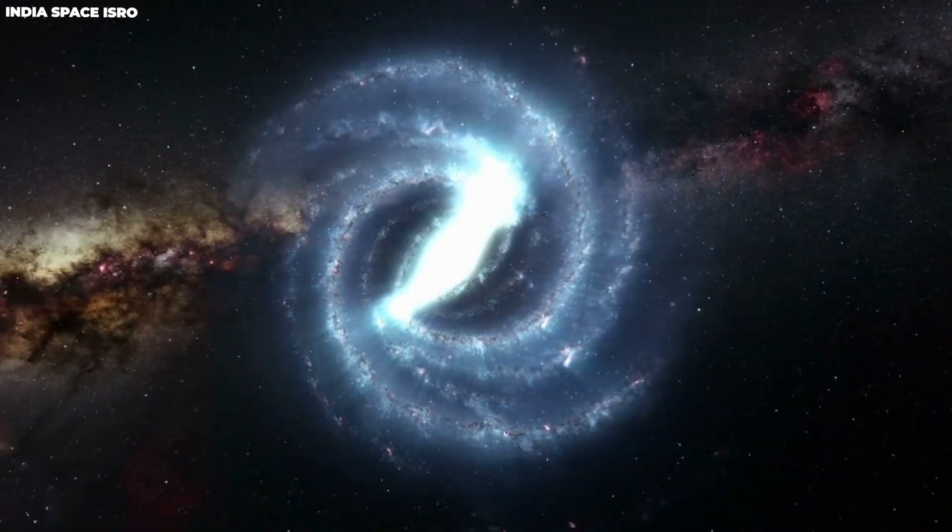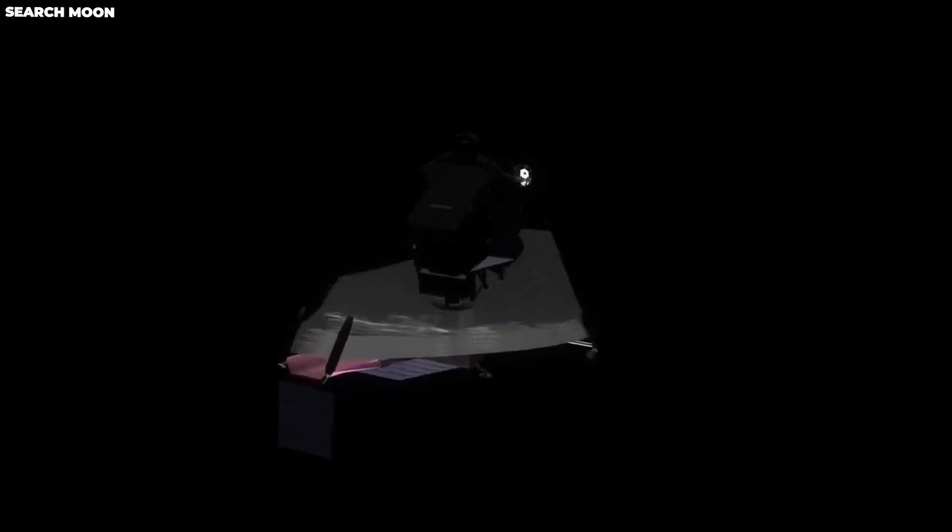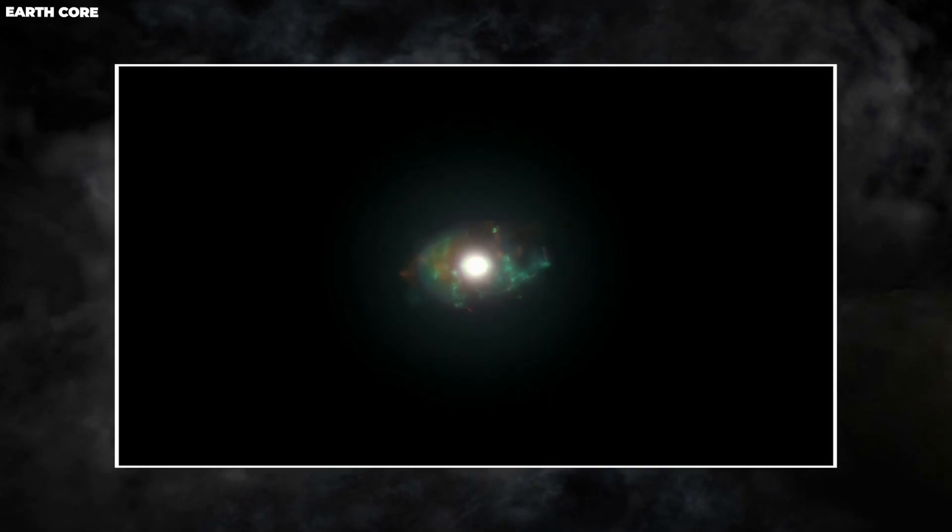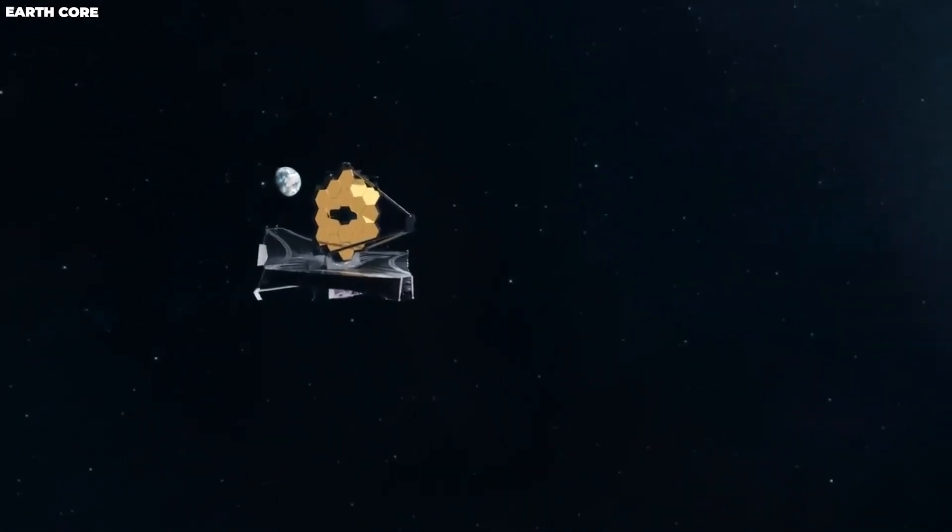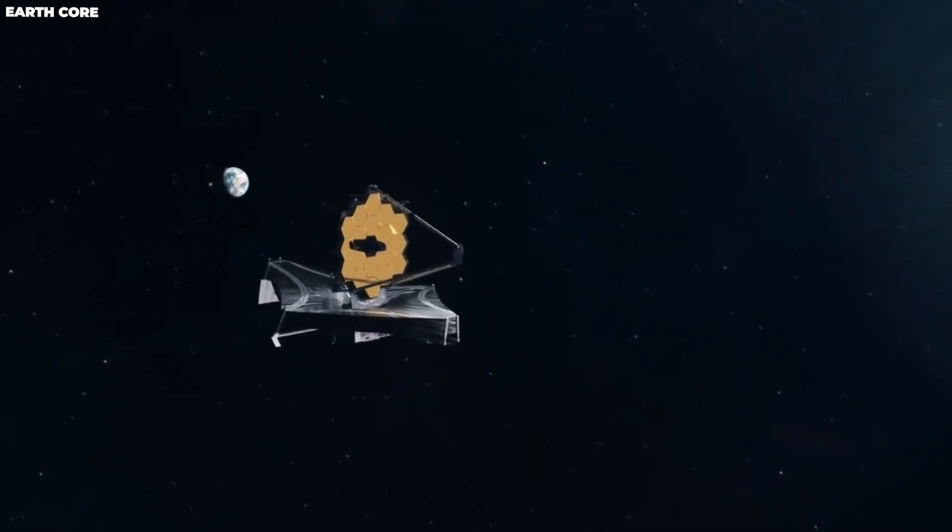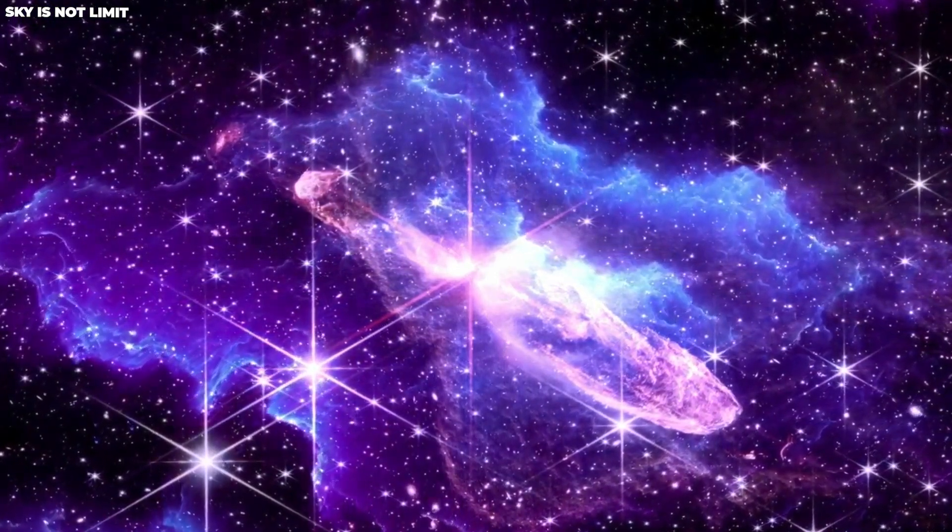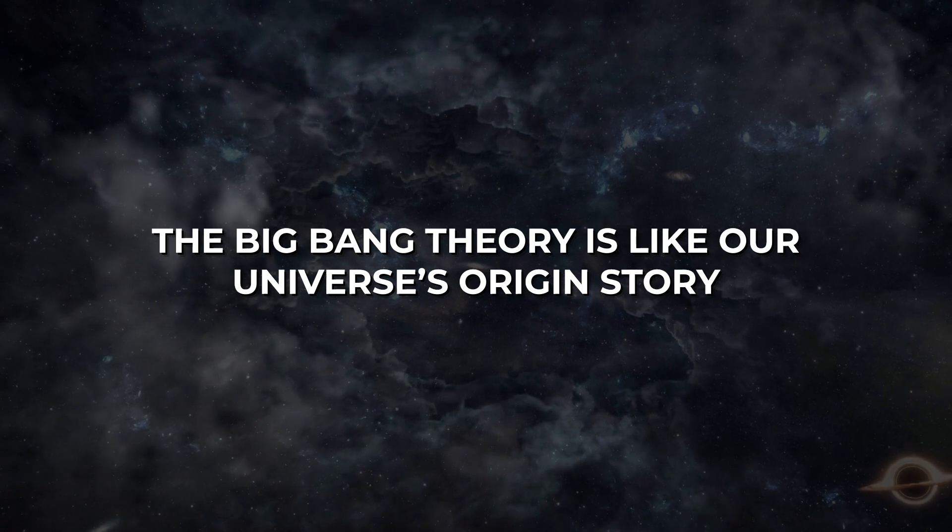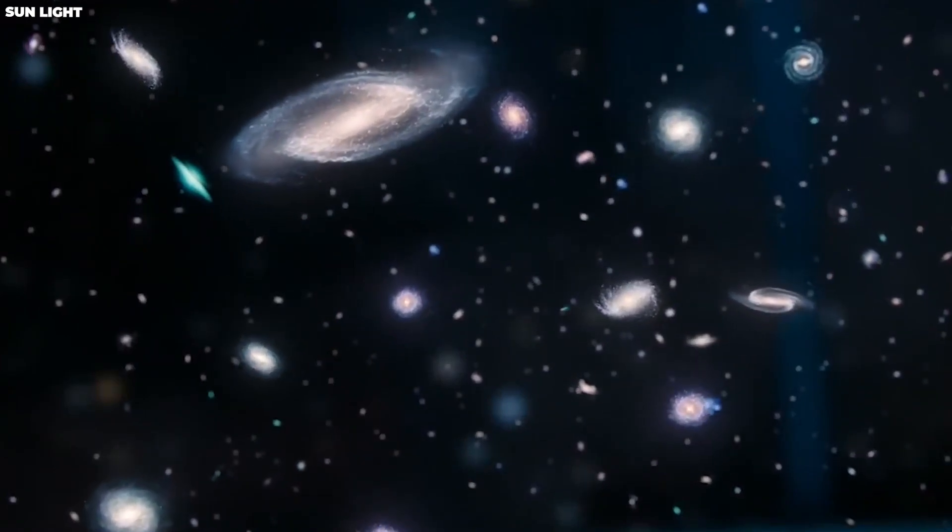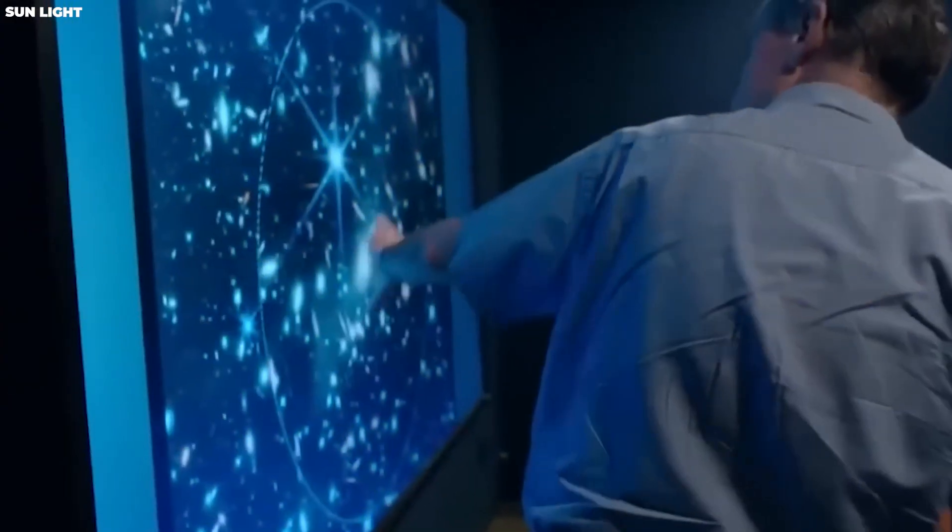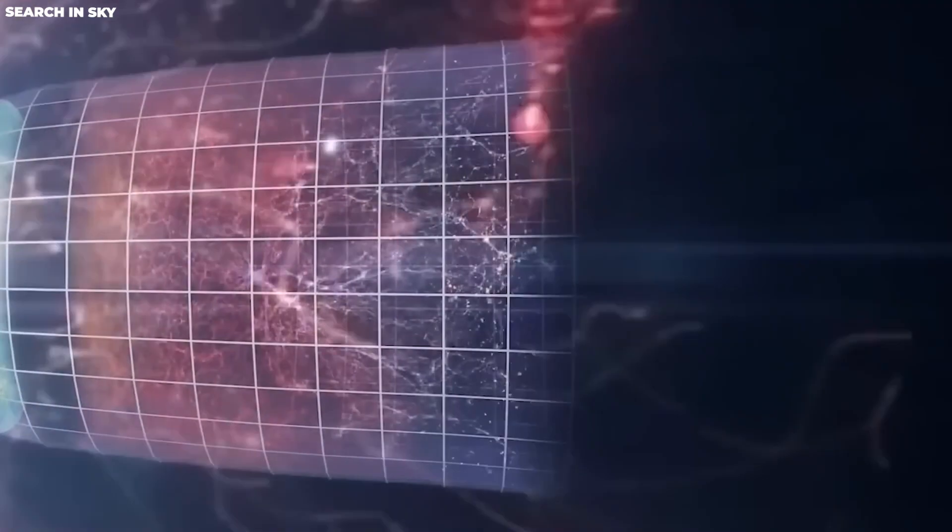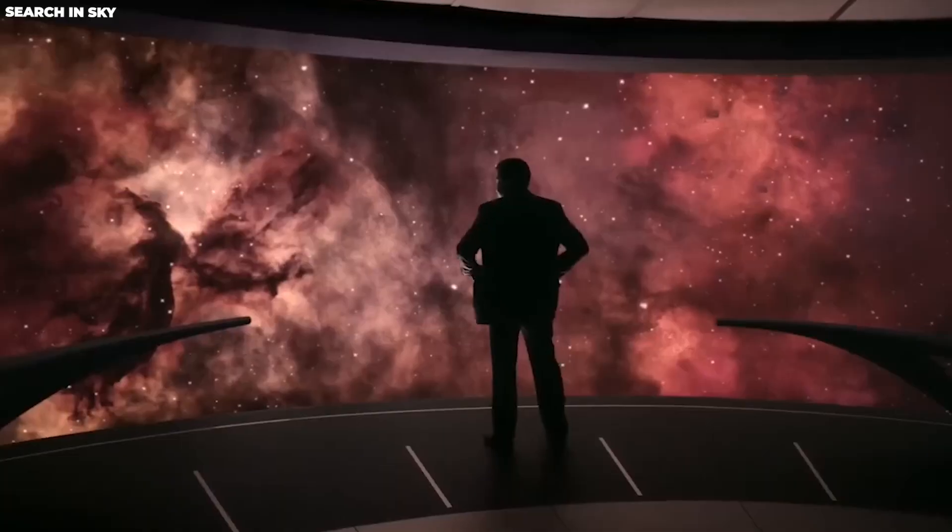For a very long time, scientists have had this idea called the Big Bang Theory to explain how our universe came to be. It's like the ultimate story of how everything started. But now, with fancy new tools and cool gadgets like the James Webb Space Telescope, some smart folks are saying, wait a minute, maybe that story isn't quite right. The Big Bang Theory is like our universe's origin story. Imagine a tiny, super-duper crowded point where everything in the universe was packed super tightly. That's what this theory says happened a long time ago.